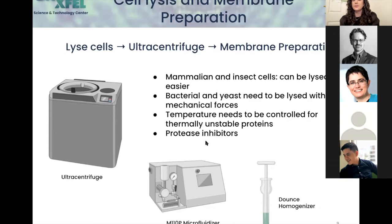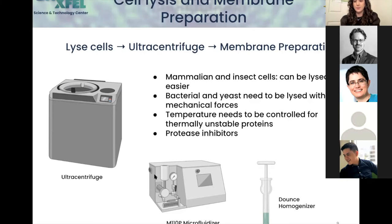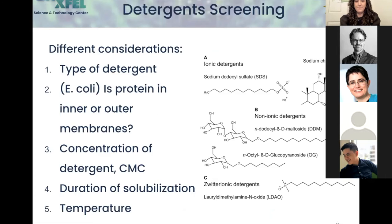Use an ultracentrifuge, and then you can do additional steps to wash out the membranes. Once you get rid of the soluble fraction, there may still be some proteins associated with the membrane. You can use a hypertonic solution and do another round of Dounce homogenization to wash off those other proteins. At the end, you'll have your protein embedded in the membranes, hopefully clean and good to go.